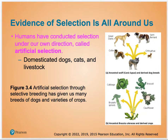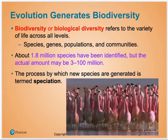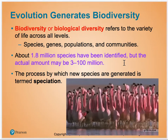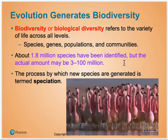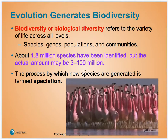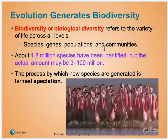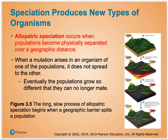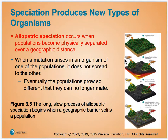Artificial selection is us breeding things on purpose because those are the traits we want. On the planet as a whole, about 1.8 million species have been identified, but scientists think there's minimally double that — if not up to 100 million species out there — many of which we just don't know about yet. Allopatric speciation is where two organisms get divided in their space, and that division over time causes gene pools to diverge until the two populations can no longer interbreed. It's the division of land that causes this type of speciation.